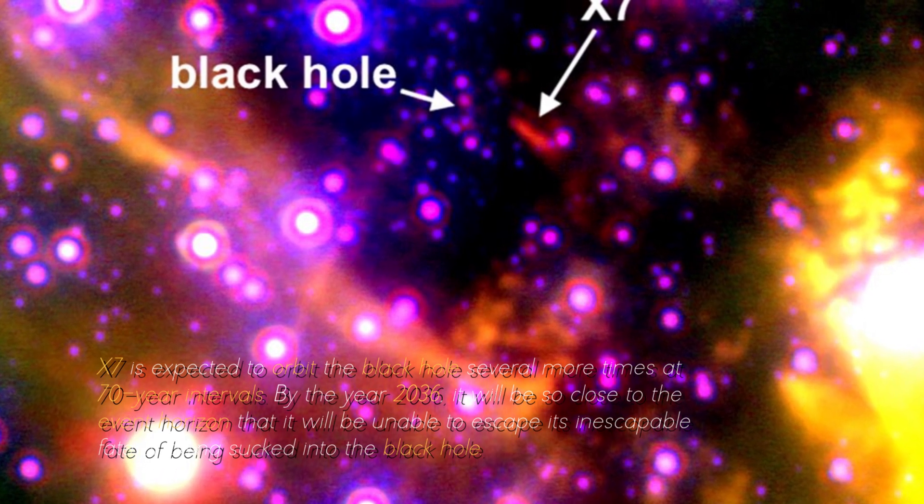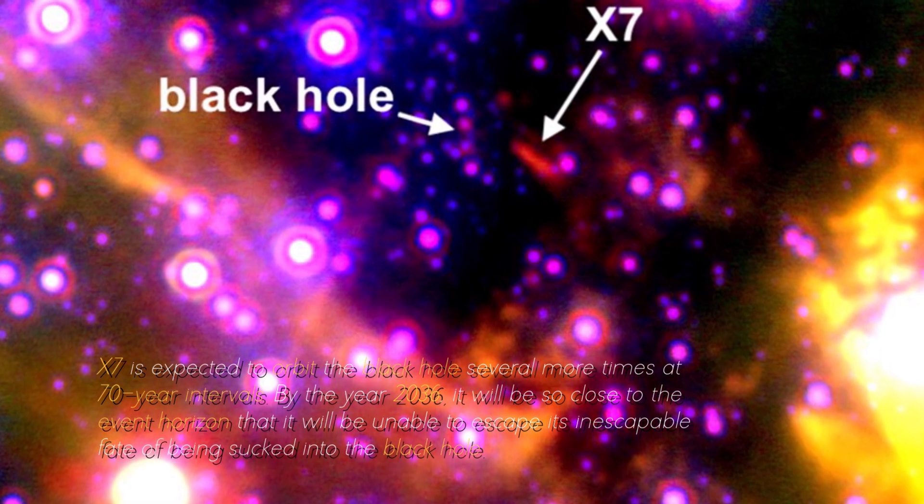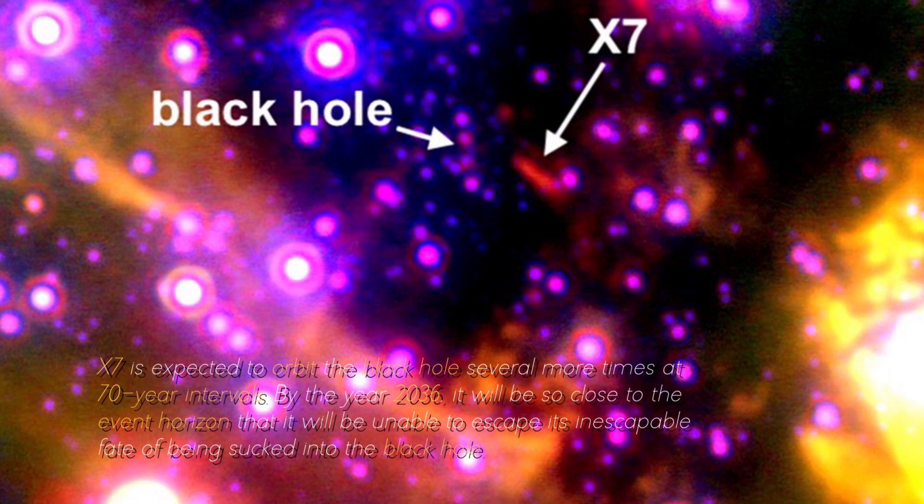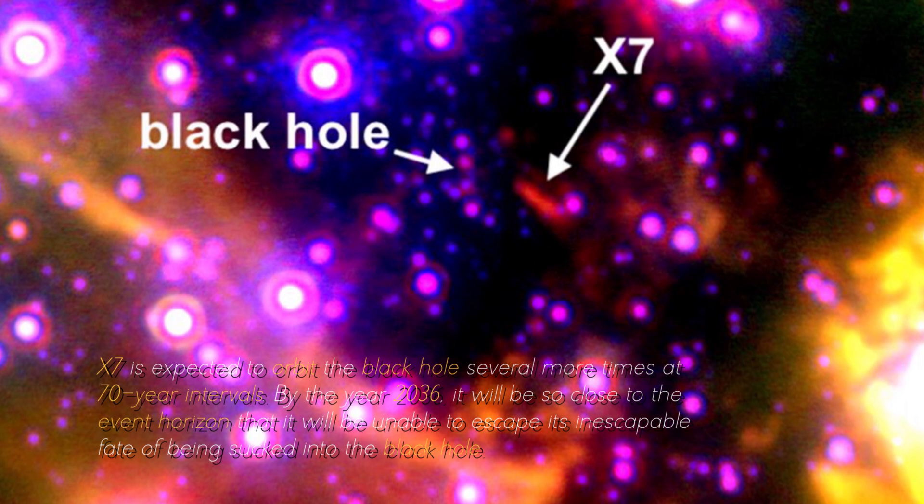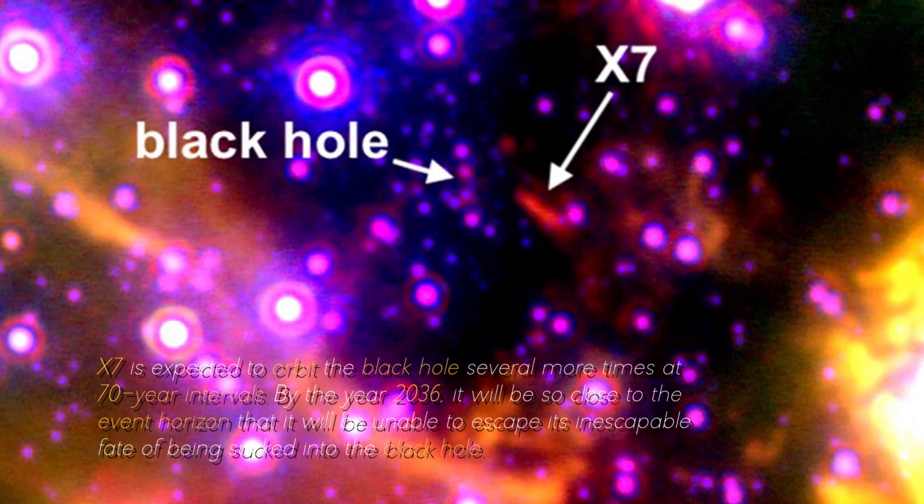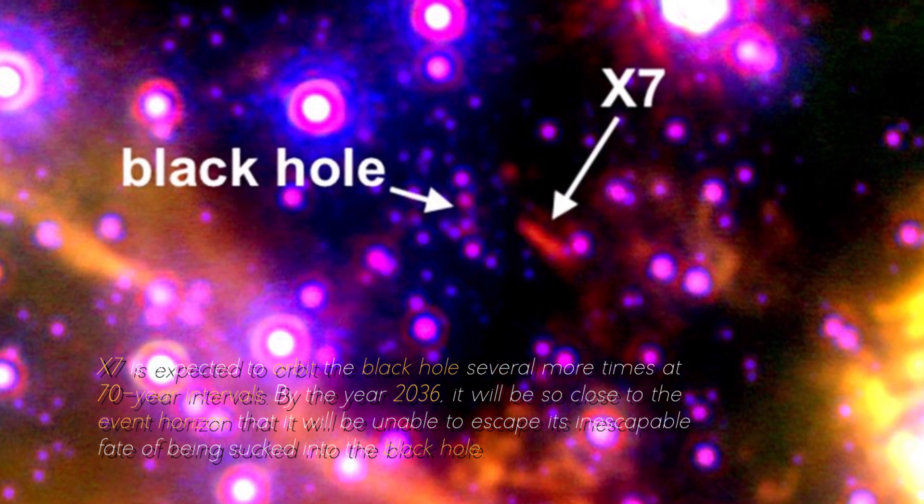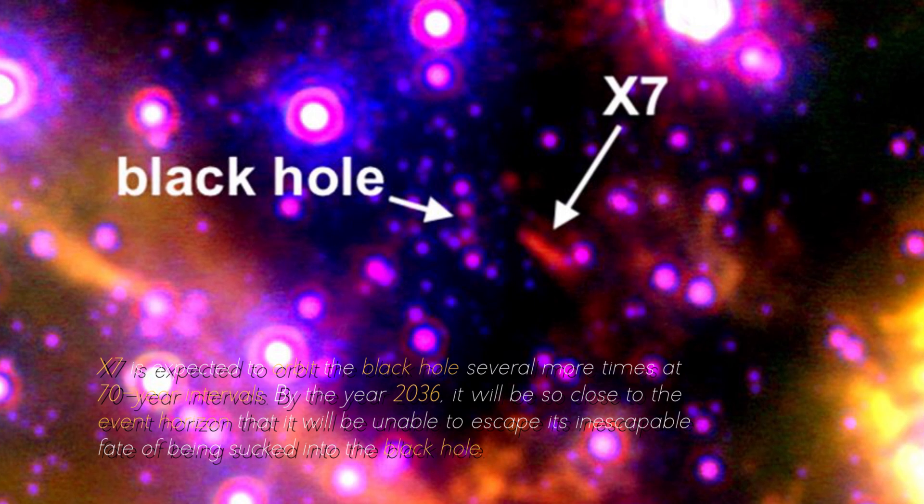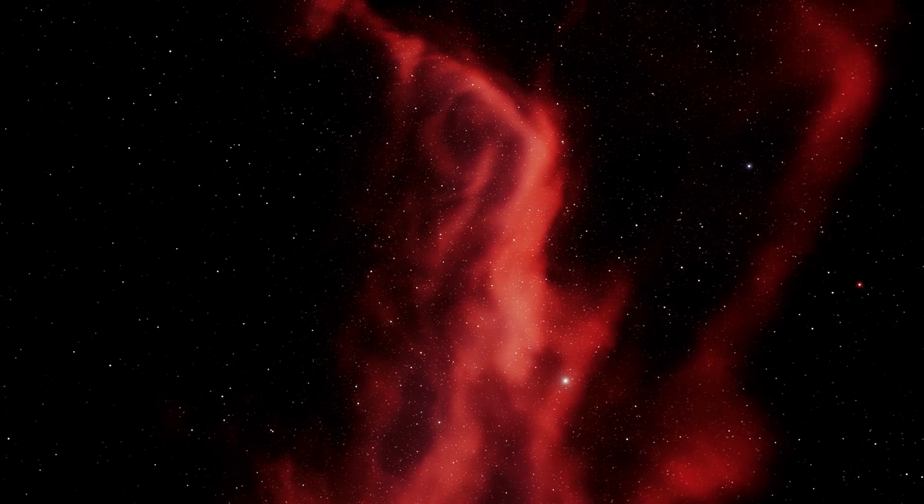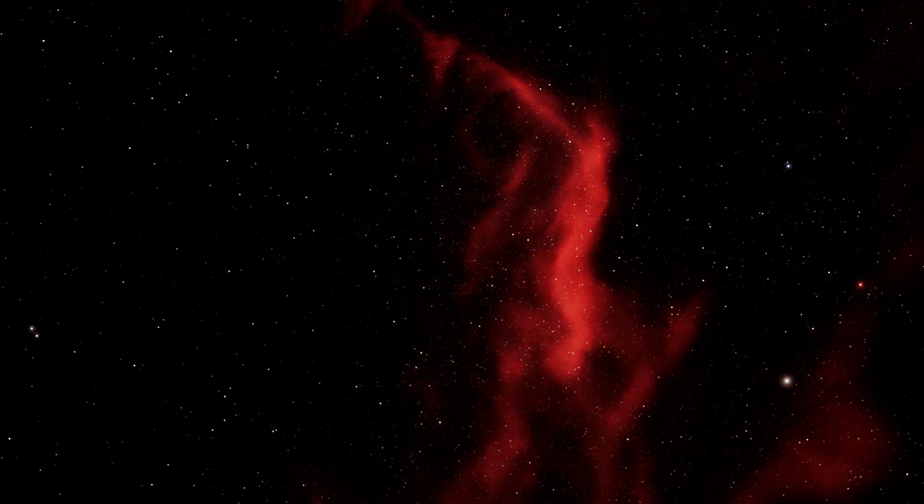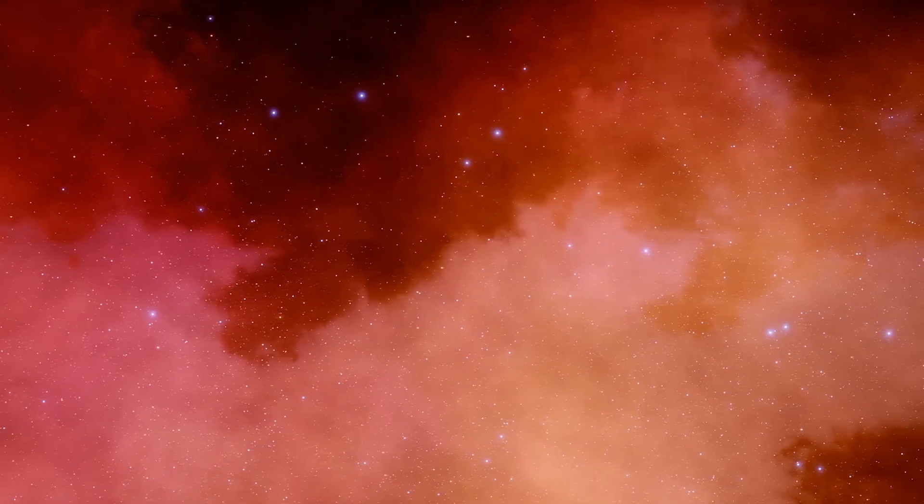X7 is expected to orbit the black hole several more times at 70-year intervals. By the year 2036, it will be so close to the event horizon that it will be unable to escape its inescapable fate of being sucked into the black hole. The immense cloud is heading towards its explosive end, finally disappearing into the center of the galaxy. This act will cause the black hole to glow brightly for a time, making it visible. However, we cannot be sure if any extraterrestrial civilization would be present and take advantage of this event.